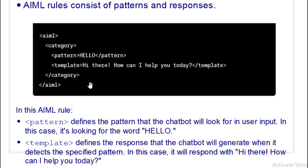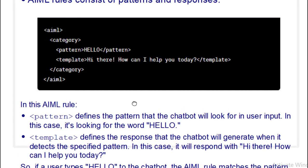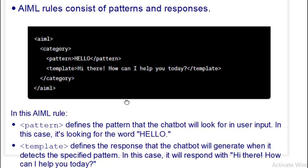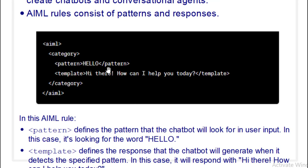So when we write the pattern 'hello', the chatbot is looking for that word. If the user types 'hello', then the template response 'Hi there, how can I help you today?' will be prompted back to the user. This is how AIML works, and we'll be using this to create the expert system.